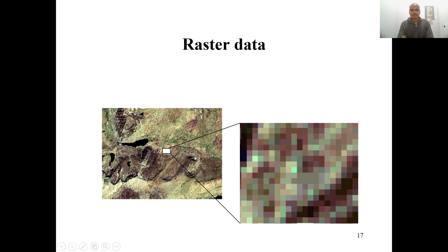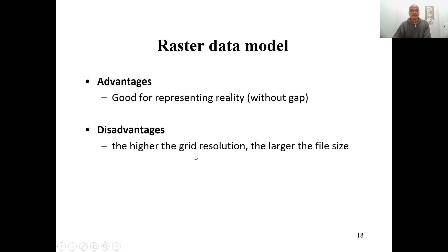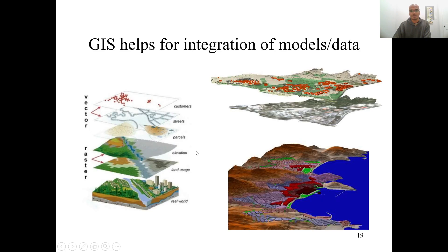Raster data is good for showing real spatial information on the earth's surface and representing data without gaps. However, the problem is that it takes up much more storage space, especially for high-resolution images covering large areas, making the file size very high and difficult to handle. Both models help us integrate spatial information into GIS, and in most cases we use both together in order to integrate the data and represent reality.